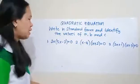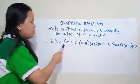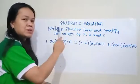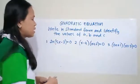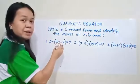So let's have an example. Number 1. So 2x times the quantity 5x minus 2 is equal to 0. So write this one in standard form by distributing 2x to the terms inside the parentheses.